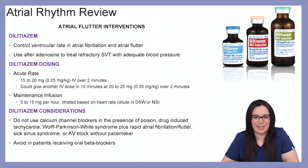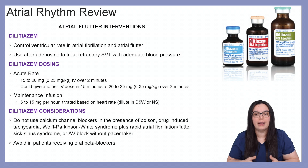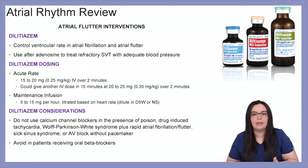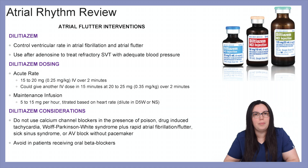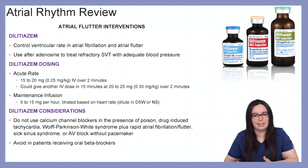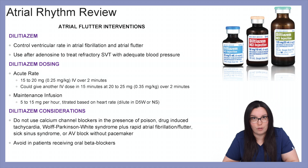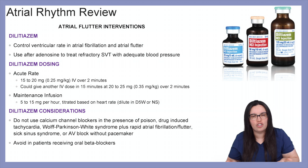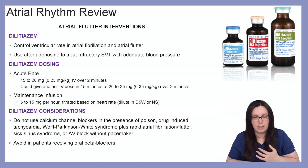Let's talk about diltiazem. We use this to control ventricular rates in atrial fibrillation and atrial flutter, and it's used after adenosine to treat refractory SVT with adequate blood pressures. The IV dose is going to be between 15 to 20 milligrams IV over two minutes. We could give another IV dose in 15 minutes at 20 to 25 milligrams over two minutes if needed. Maintenance infusions will be between 5 to 15 milligrams per hour, titrated based on heart rate.